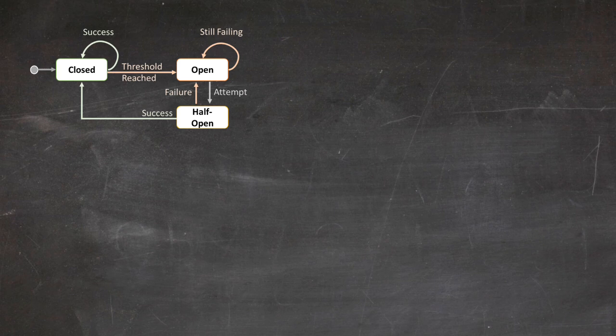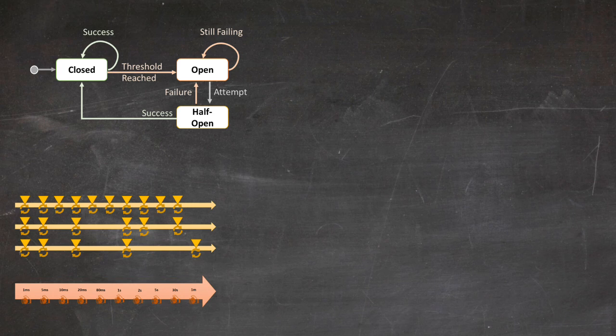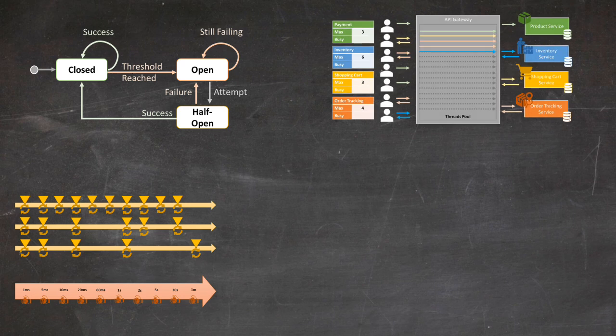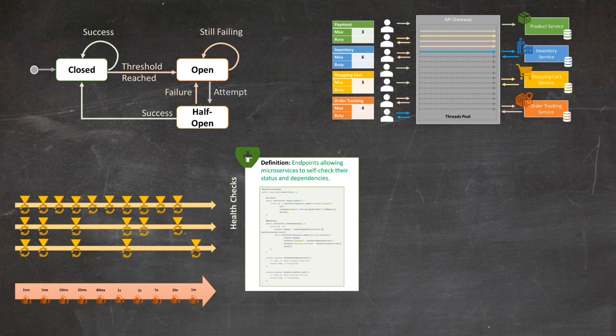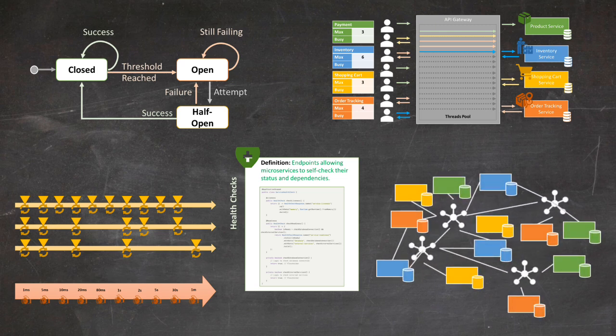First, we'll look at the circuit breaker pattern, which helps prevent cascading failures. Then, we'll discuss retry and timeout mechanisms for handling transient failures. Next, we'll explore the bulkhead pattern for isolating components. We'll also cover health checks and self-healing strategies, crucial for maintaining system integrity. Finally, we'll touch on how service mesh can be leveraged for resiliency.